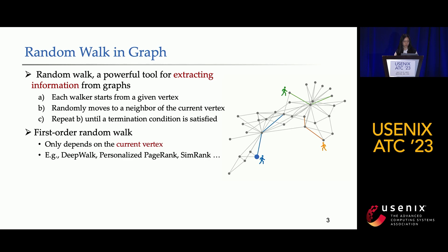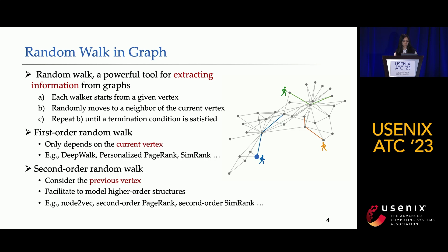Many encouraging results have been obtained under this assumption, such as DeepWalk, PPR, and SimRank. While some recent works have revealed the necessity of second-order random walks, which considers recent walk history — that is, the previous vertex in selecting the next stop — facilitating the modeling of higher-order structures in real-world data, such as Node2Vec, second-order PageRank, and second-order SimRank.